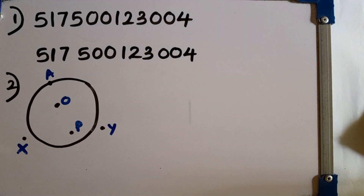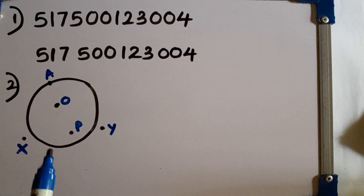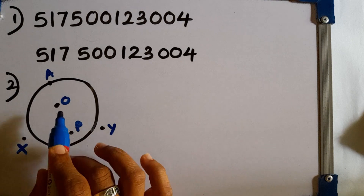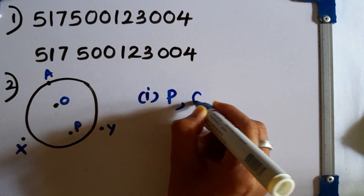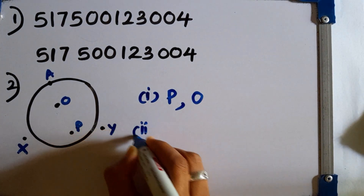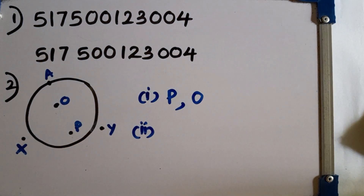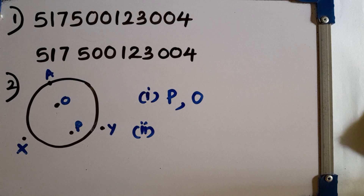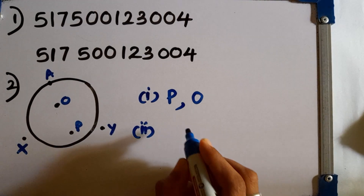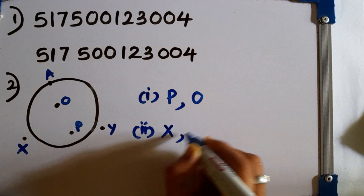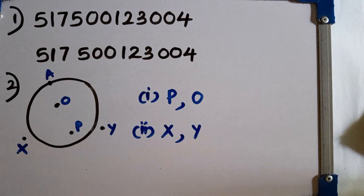Second question: in the given figure, name a letter which indicates a position inside the circle. The points inside the circle are O and P — both are inside the circle, so you can choose one letter. Then, name a letter which indicates a position outside the circle. X and Y are outside the circle; you can choose one of these letters.